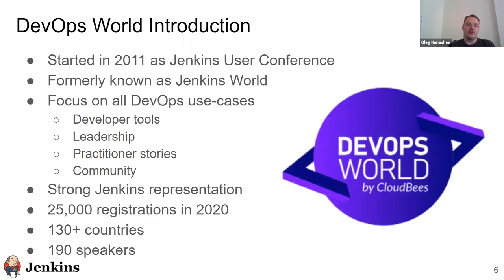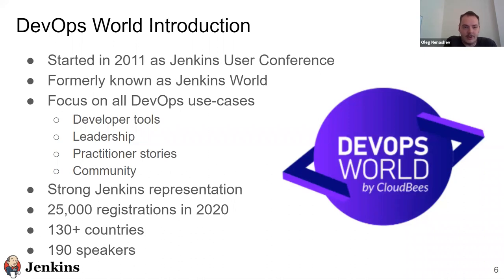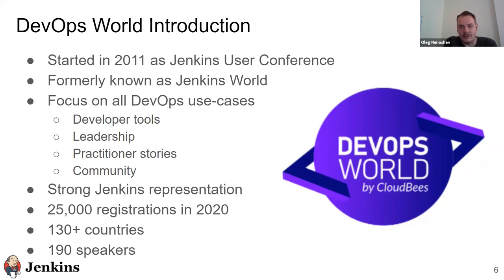DevOps World started in 2011 as the Jenkins User Conference, then it was renamed to Jenkins World, and now it's called DevOps World. The event has a long history and has been evolving over the past years. It started as a Jenkins-only event, and now the focus is on the entire DevOps ecosystem and processes — developer tools, leadership tracks, practitioner tracks, and community tracks. Last year we had 25,000 registrations and at least 2,000 participants.